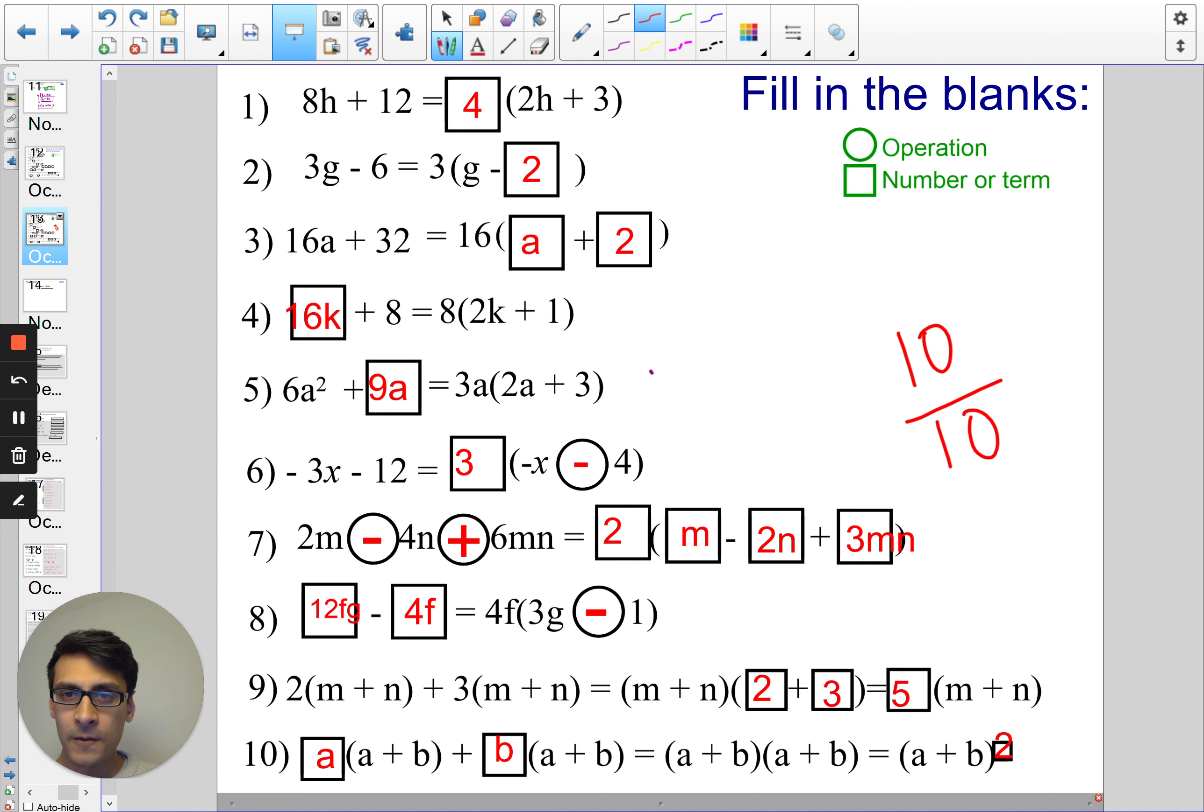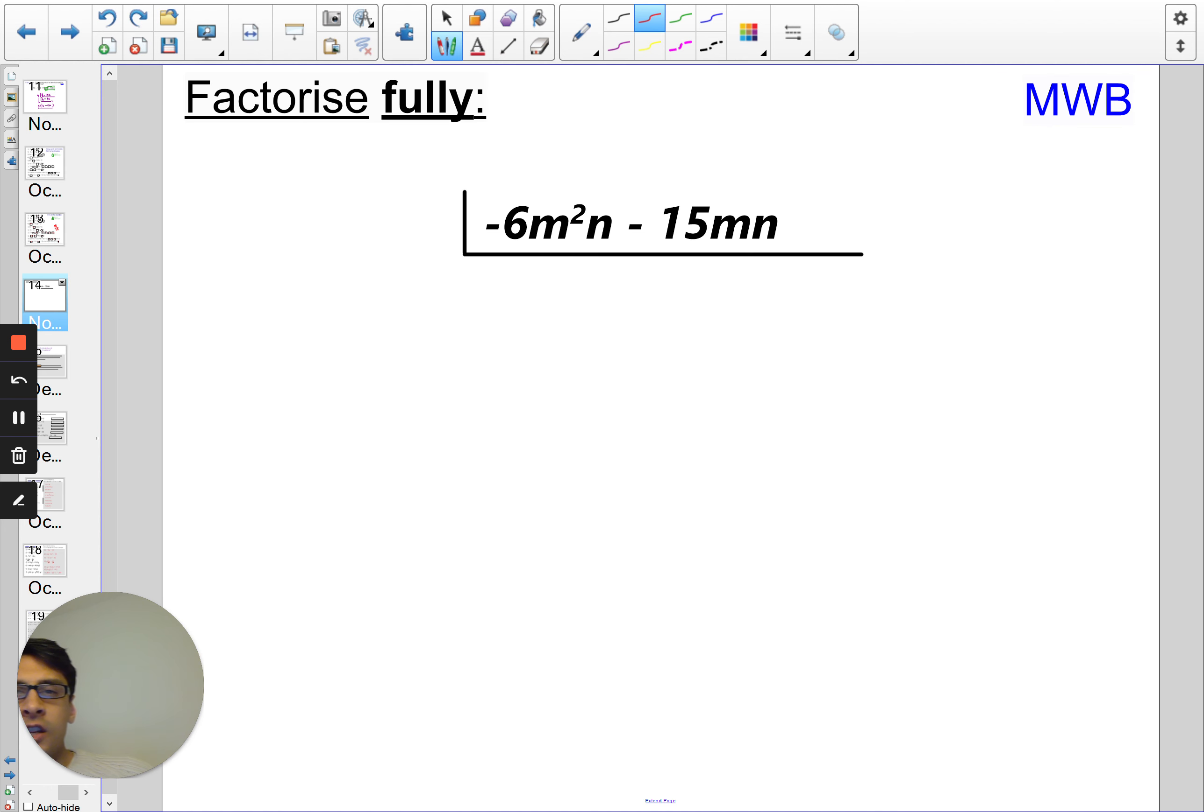Okay, so I'm going to show you an example here. Before I go through it, I want you to actually do the question and then we'll talk through it. Okay, so you should have done this question now. Pause the video if that wasn't enough time. And I can see that I can take out a factor, for example, of 3mn.